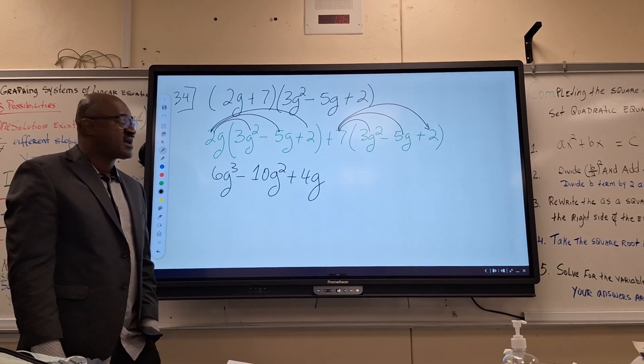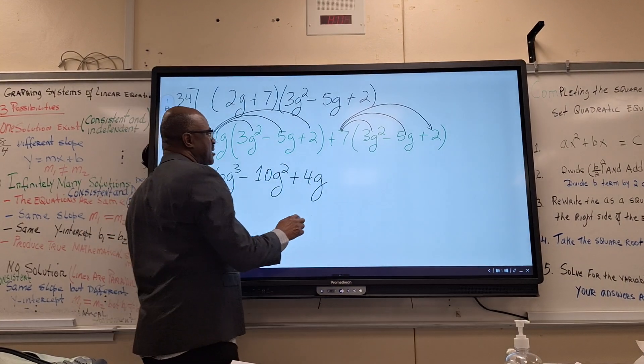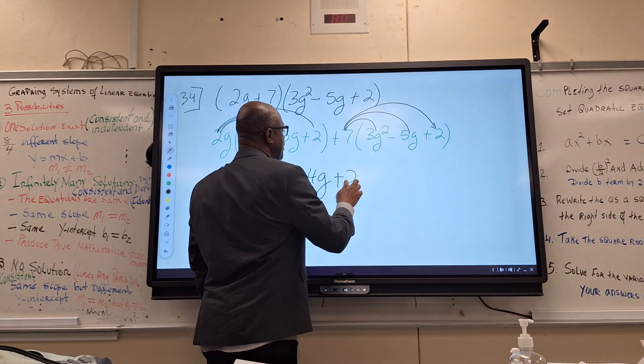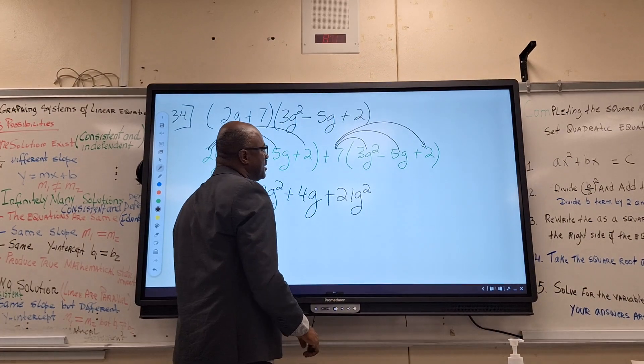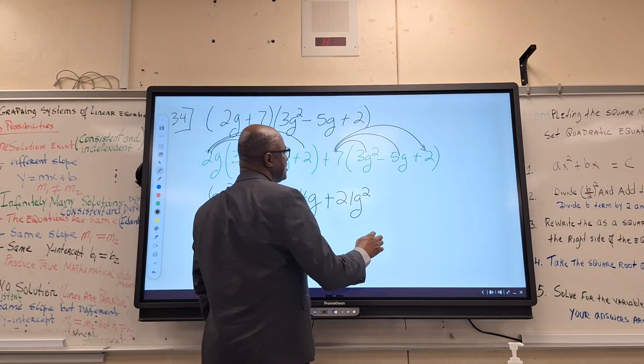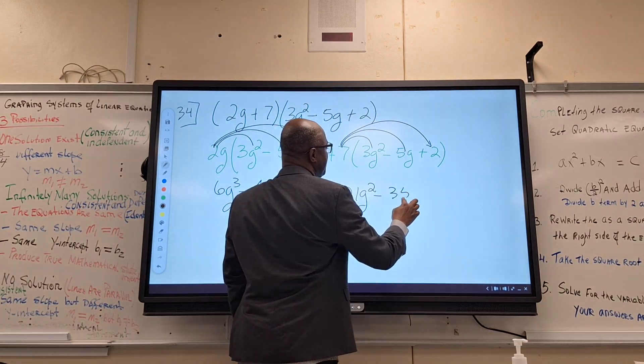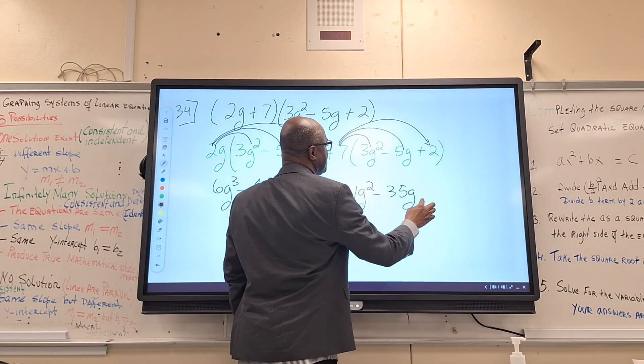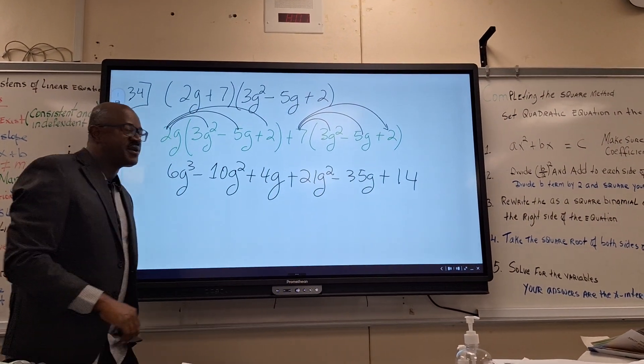Then we go on to the second one. We'll end up with what? Plus 21G squared. Good for you. Minus. Minus what? Minus 35G plus 14. We've done all of this distributive property.